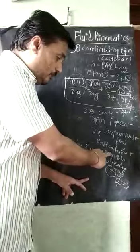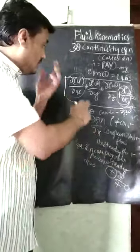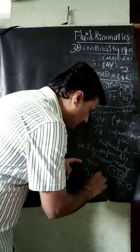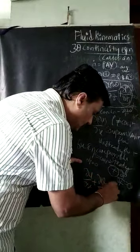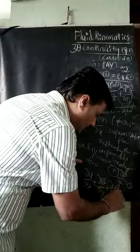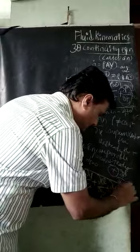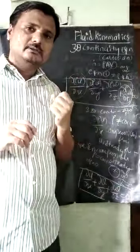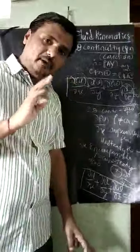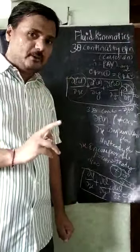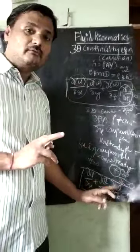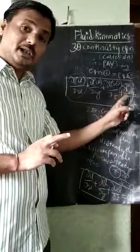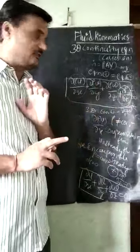For the incompressible steady flow, this equation becomes: ∂u/∂x + ∂v/∂y + ∂w/∂z = 0. This is the three-dimensional incompressible steady flow equation. For unsteady flow, the term ∂ρ/∂t will still exist.